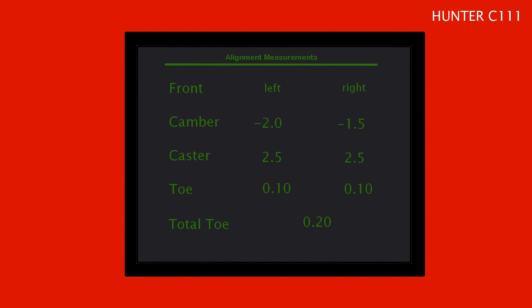To determine which eccentric sleeve to use, first we will take an initial reading with the aligner, print or write down the angle.